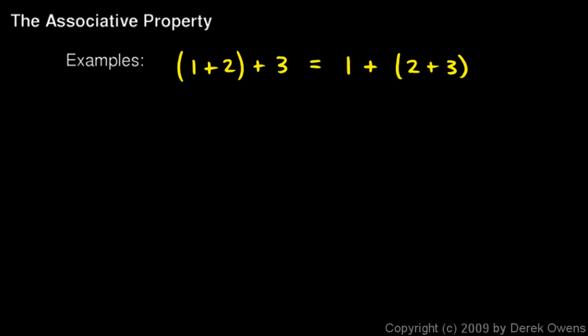And the same thing also works for multiplication. If I say 2 times 3 times 4, that's going to be the same as 2 times 3 times 4. So it doesn't matter if I multiply the 2 and the 3 first, or the 3 and the 4 first. 2 times 3 will give me 6, and then when I multiply by 4 I get 24. And 3 times 4 is 12, and when I multiply by 2 I get 24. So when we're adding or multiplying, the grouping doesn't matter. We get the same result either way.